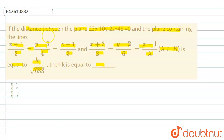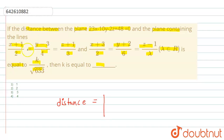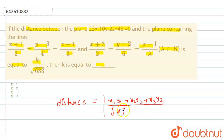Since we know that when we have to find the distance between the plane and the line, there is a formula. The distance formula is: modulus of (a·x₁ + b·y₁ + c·z₁ + d) upon the under root of (a² + b² + c²), where a, b, c are the coefficients of the plane and (x₁, y₁, z₁) is a point on the line.